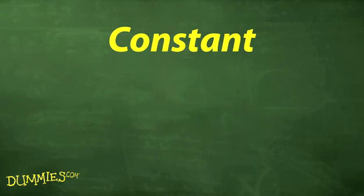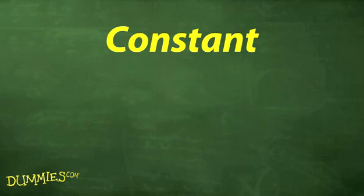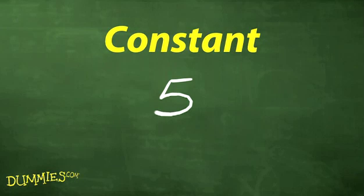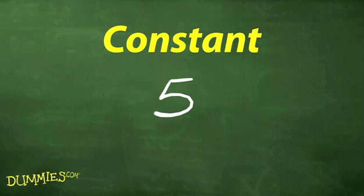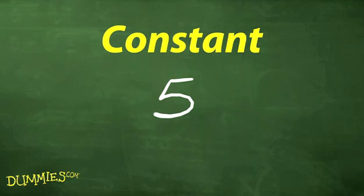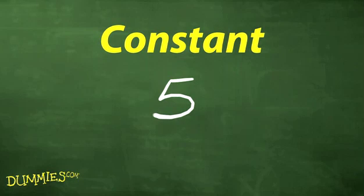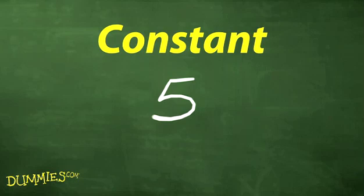A constant is a value or number that never changes in an equation. It's constantly the same. The number 5 is a constant because it is what it is. A variable can be constant if it is assigned a definite value. Usually, a variable representing a constant is one of the first letters in the alphabet.